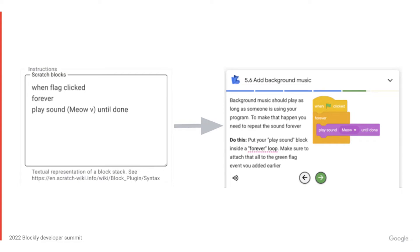We allow content authors to define blocks using a domain-specific language when they're writing lessons, and dynamically render the corresponding blocks in an off-screen Blockly workspace. Since blocks in Blockly are scalable vector graphics, also known as SVGs, we're able to return the SVG corresponding to the blocks and render a pixel-perfect, scalable representation of the blocks inline in the content without any network requests.